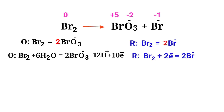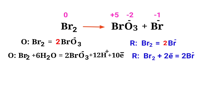Make electron gain equivalent to electron loss. The electrons lost in the oxidation half reaction must equal the electrons gained in the reduction half reaction. The oxidation half reaction has 10 electrons, while the reduction half reaction has only 2. To balance, multiply the reduction half reaction by a coefficient of 5.